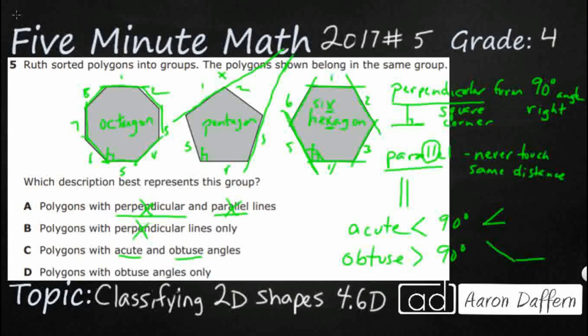Well, that's obtuse. That's bigger than that 90, right? That's my 90, that's bigger. You know, it looks like my hexagon is all obtuse. Looks like my pentagon is also all obtuse. And there's no acute in the octagon. So that's what it is. It's all obtuse angles, D.